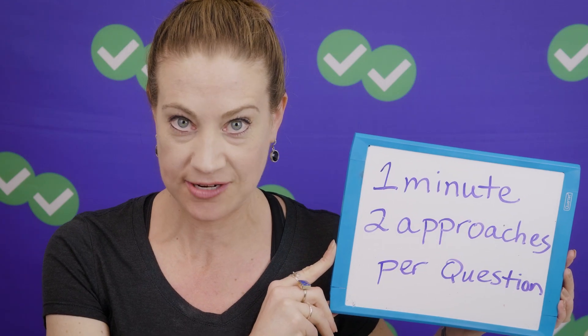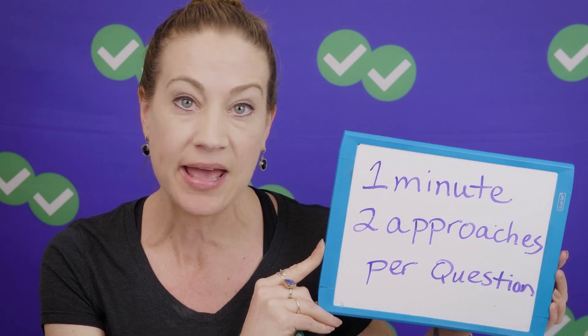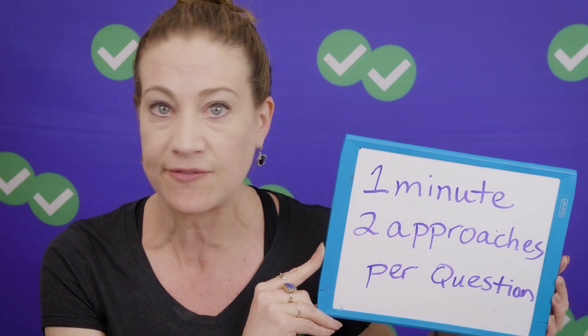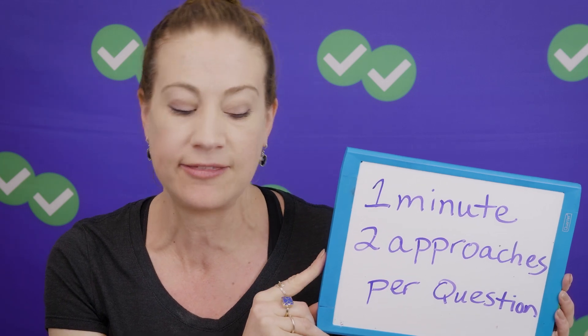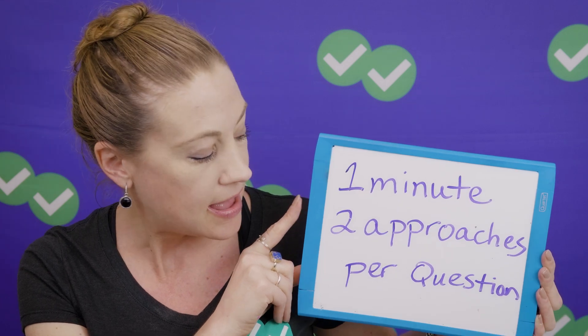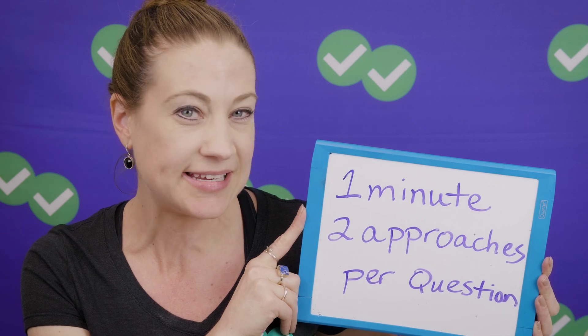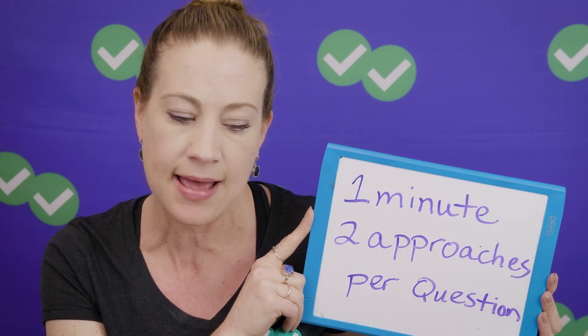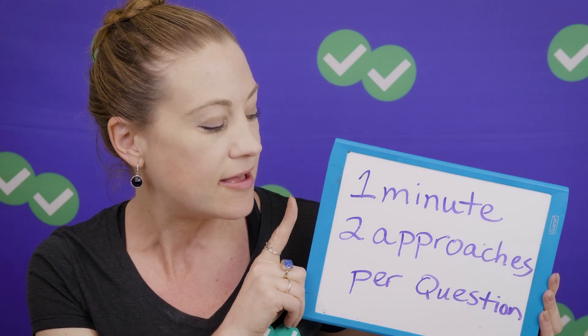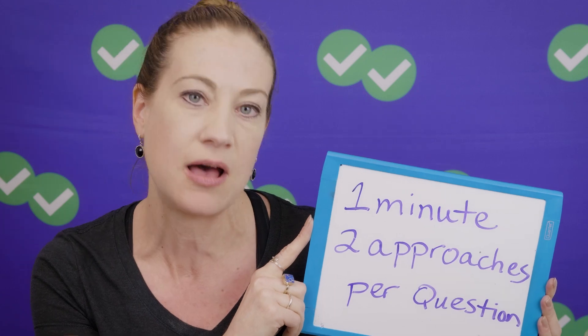One minute, two approaches per question. In the ACT math section you're going to be answering 60 questions in 60 minutes — that doesn't leave you a lot of time. One mistake students often make is they put way too much time into questions they don't immediately understand. One minute maximum before you skip; you can come back to it later. Another way to think about this is two approaches: if you don't get an answer after two different attempts — maybe you work it backwards, maybe you plug in a sample number — after two approaches, just skip if you haven't come up with an answer.